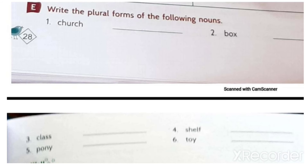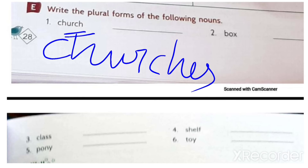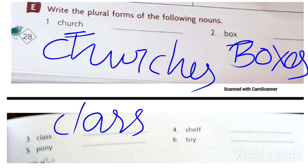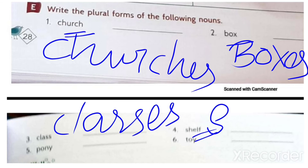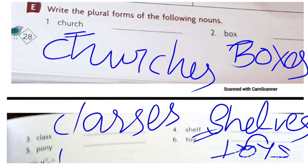Write the plural form of the following nouns. Nouns ending in -ch get E-S added: churches. Nouns ending in -x also get E-S: boxes. Nouns ending in -f, we remove the F and add V-E-S: shelves. For toy, we simply add S because the vowel comes before Y. For pony, Y is preceded by a consonant N, so we replace Y and add I-E-S.